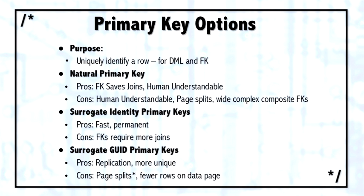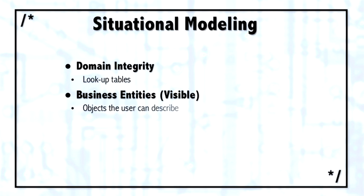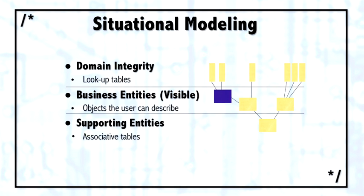When I'm working with primary keys, I actually use a system called situational modeling. And in situational modeling, what I do is I divide up the schema into three different areas. In the center are business entities, also called visible entities. When you sit down with the user and they describe what they want the database to contain, these will be the entities that they understand: orders, customers, products, shipping information. These are the documents they work with on a day-to-day basis.